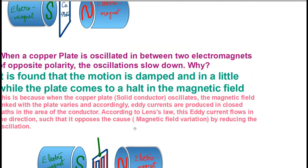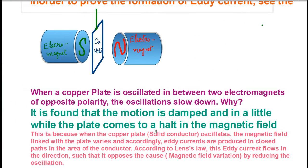What happens if the magnetic field is switched off? If the magnetic field is switched off, the copper plate will be continuously oscillating, and slowly, because of air friction, it may come to a stop. But it can oscillate for a longer time than when the magnetic field is present.